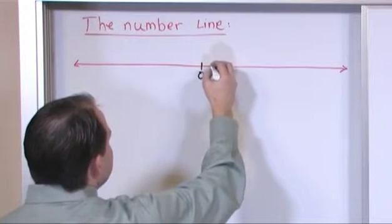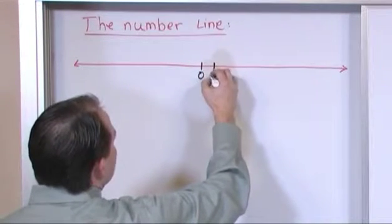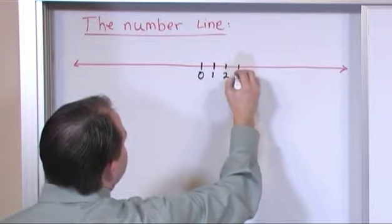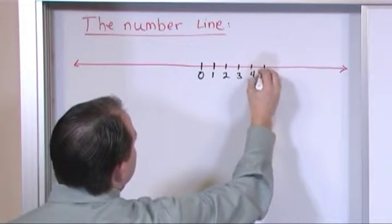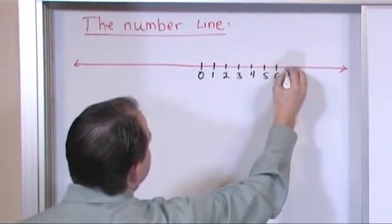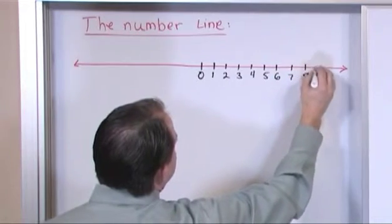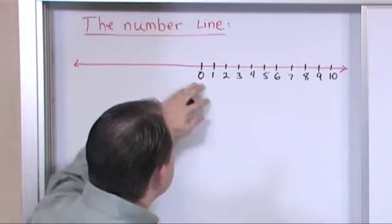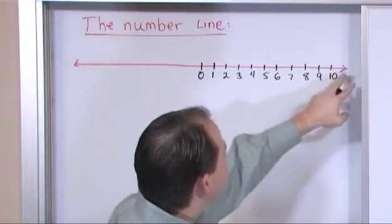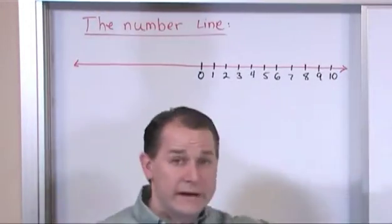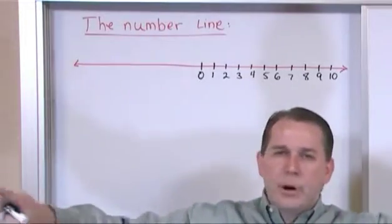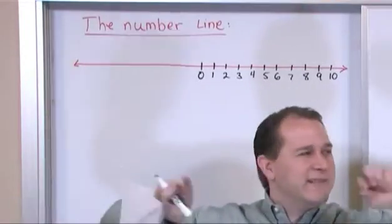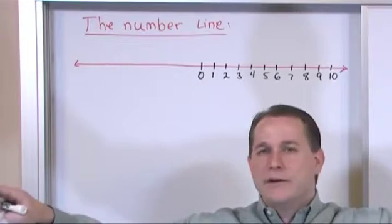So the way you write your number line is you put little tick marks. One, two, three, four, five, six, seven, eight, nine, ten. Now you can write your number line to have as many numbers as you want because this little arrow here means it goes on to infinity. So the number line really goes in both directions forever and ever. It contains every number that you could possibly think of.